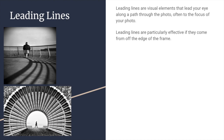This is another example that doesn't have a whole lot of standalone story, but we can see that the sweeping lines of this rail and the shadow of the rail lead our eyes to the subject sitting in the chair in pretty much the middle of the photo.